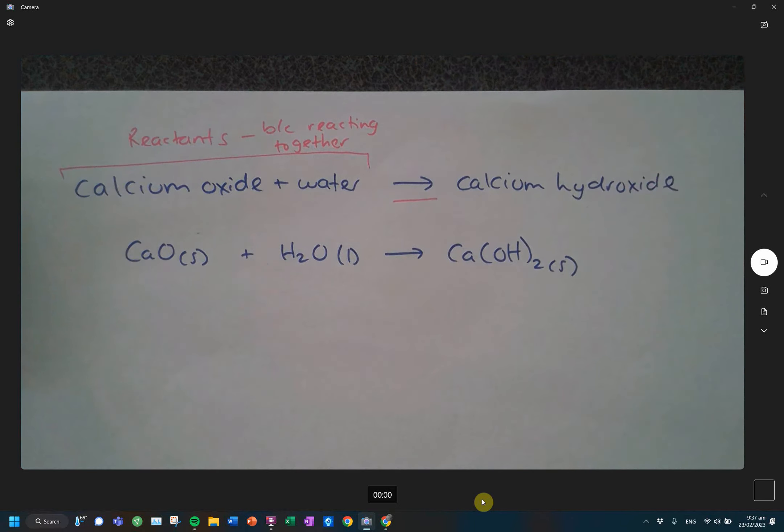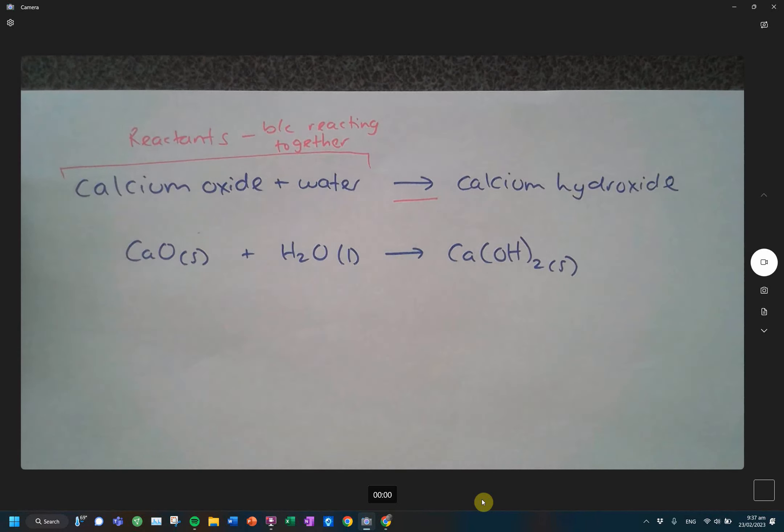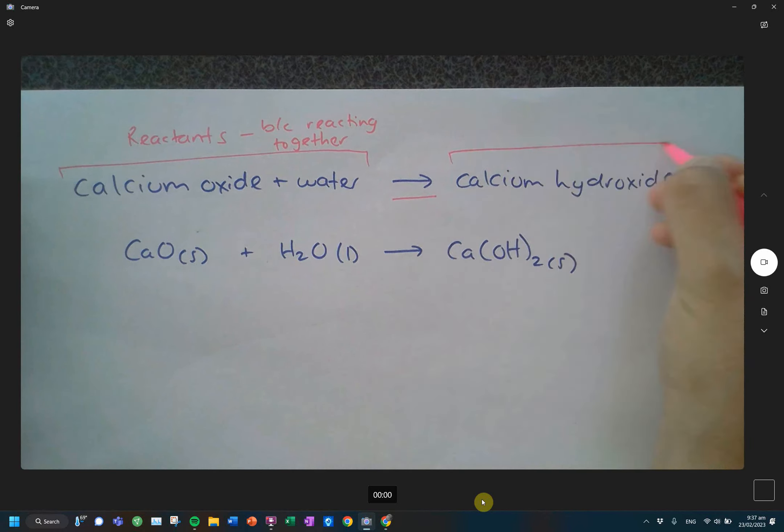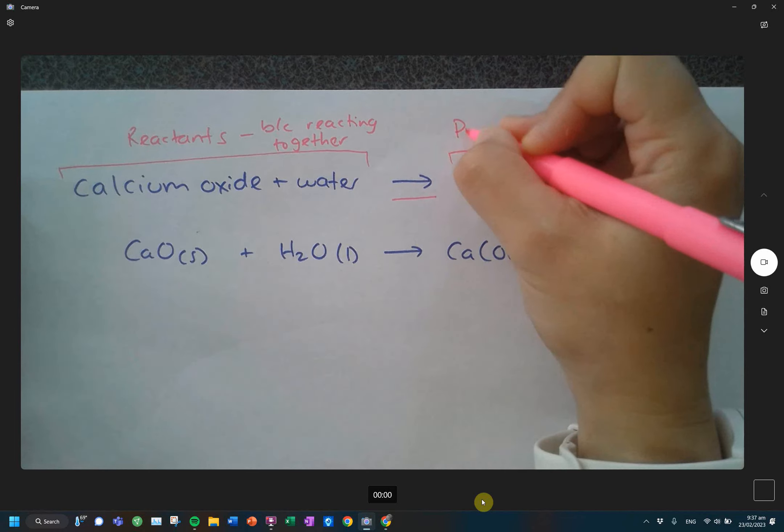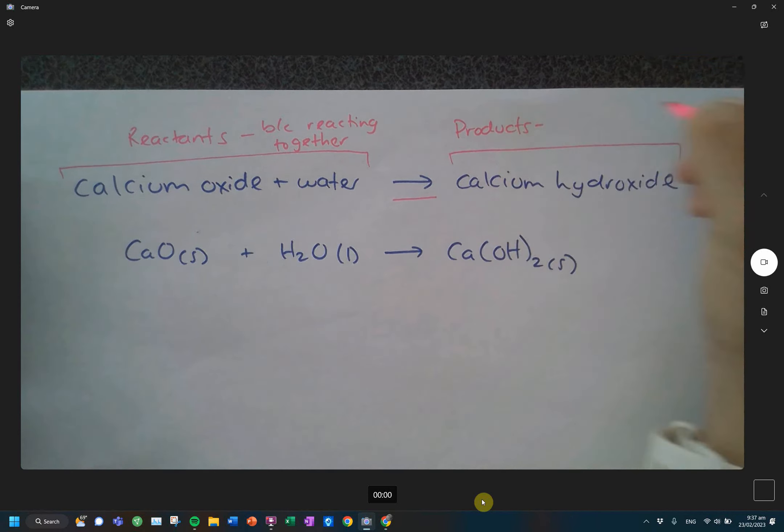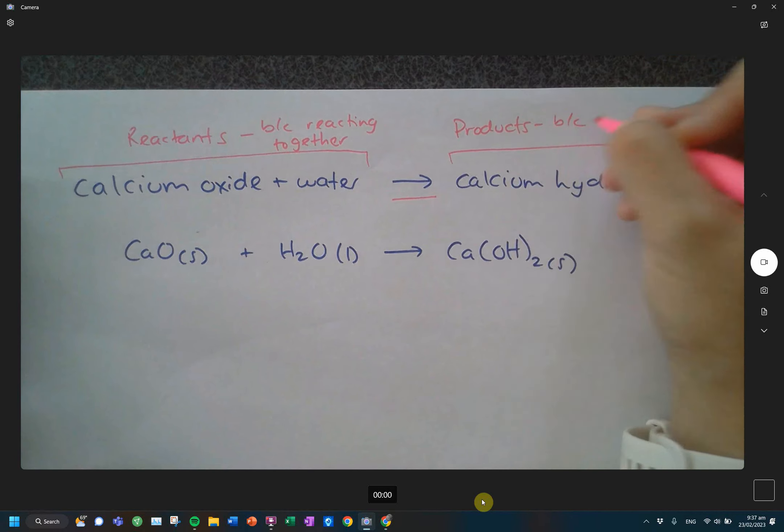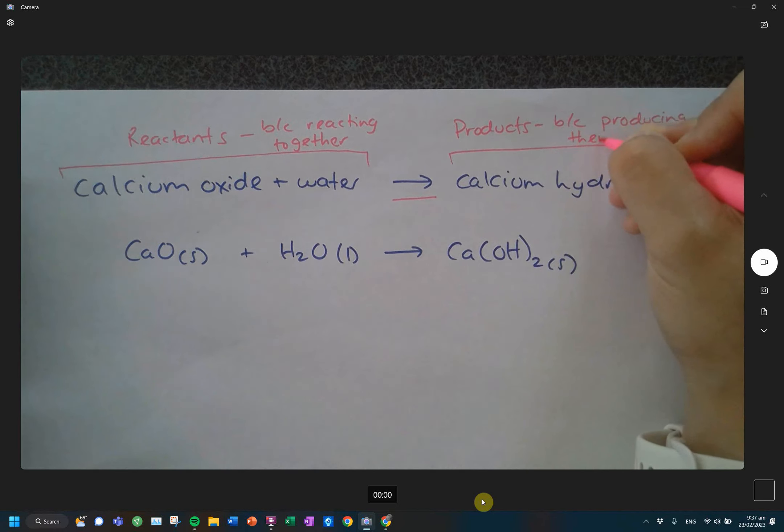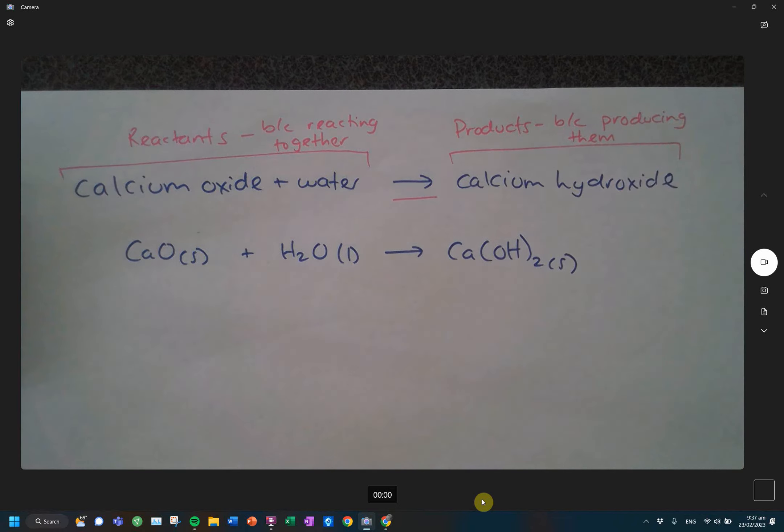And that is because they are reacting together. The B-C with the slash, that is just me writing the cause in my shorthand. And then when I look, there's after the arrow. So after the arrow is my products. And I call that my products because we are producing them. So when I ask what are the reactants, you know what I'm referring to. When I ask what are the products, you know what I'm referring to. Very key vocabulary in chemistry.